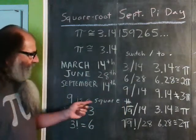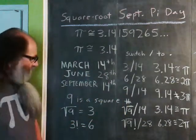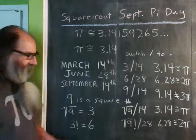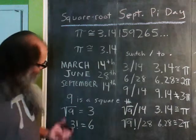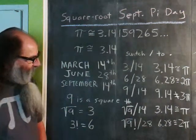But, 9 is a square number. If we take the square root of 9, we get plus or minus 3, but ignoring the minus, square root of 9 is 3.